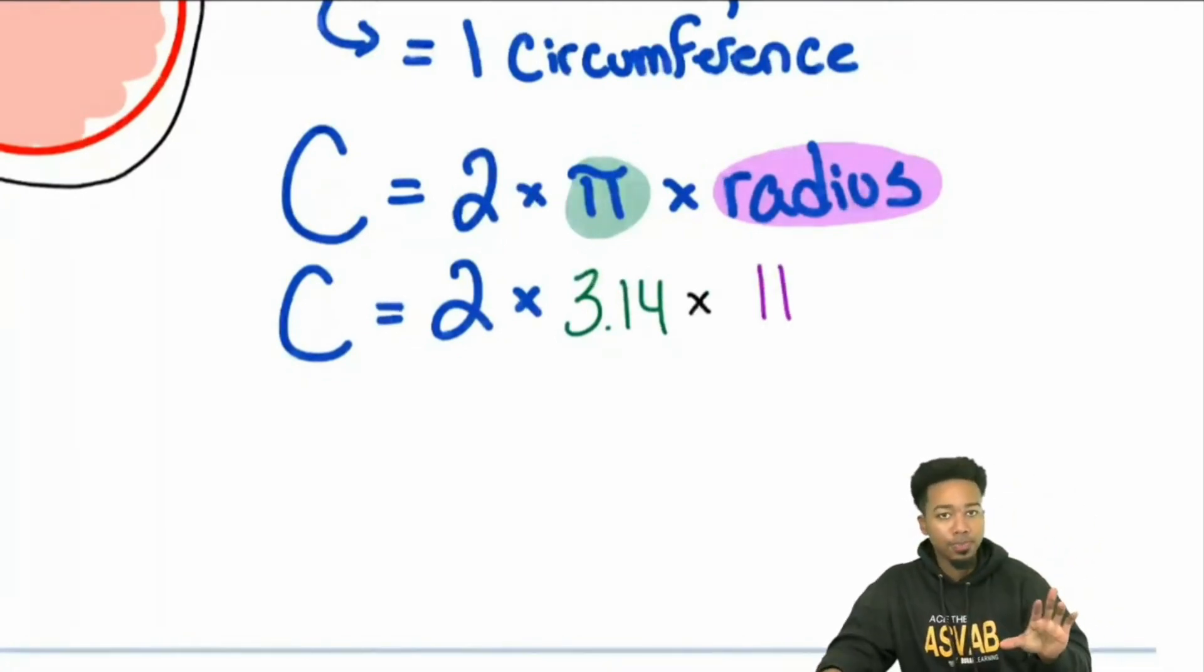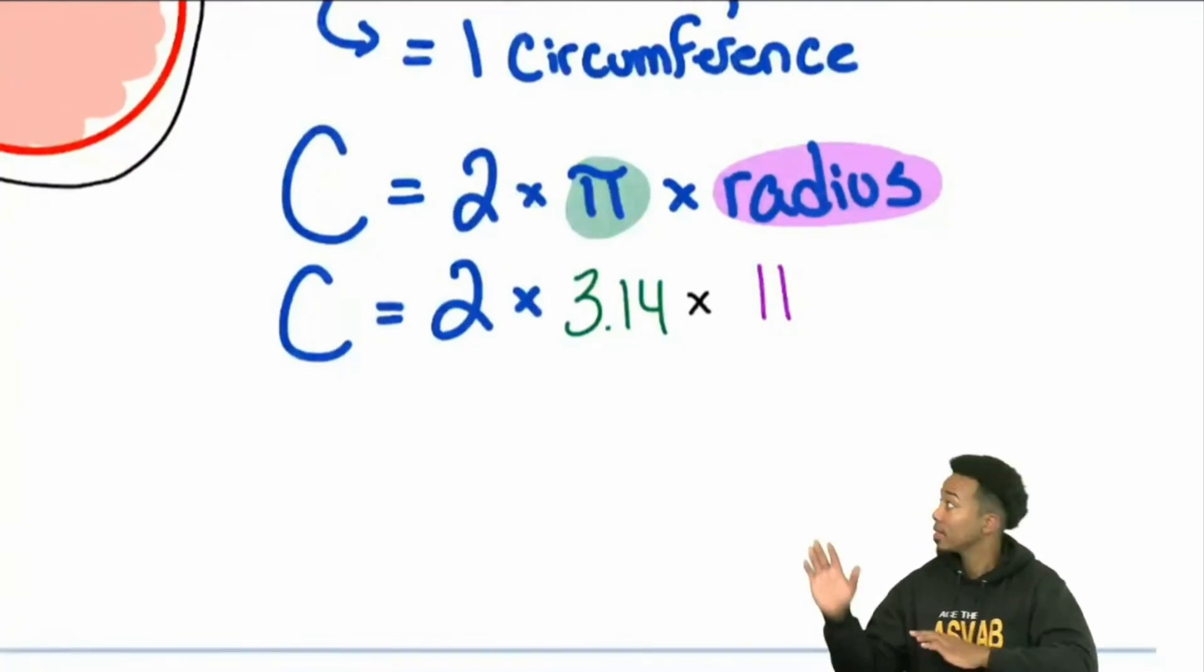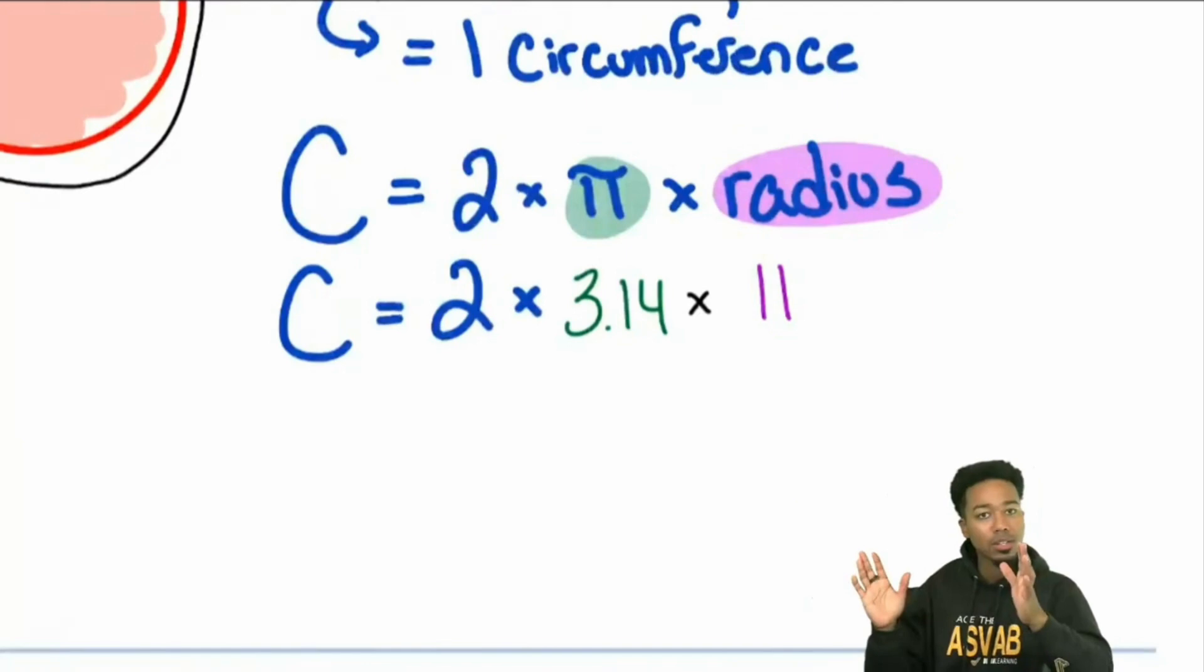So when we plug this in, this is what we have. Let me zoom on in. Don't worry, at the end I'll zoom on out so you can take a picture. But what we have now is the circumference equals two times pi, which is 3.14, times 11, which was the radius. Before I continue, do you notice that once we know the formula, all we have to do is plug the right things into the right places? Is that making sense? Nice. Nice, nice, nice. So let's go ahead and proceed.